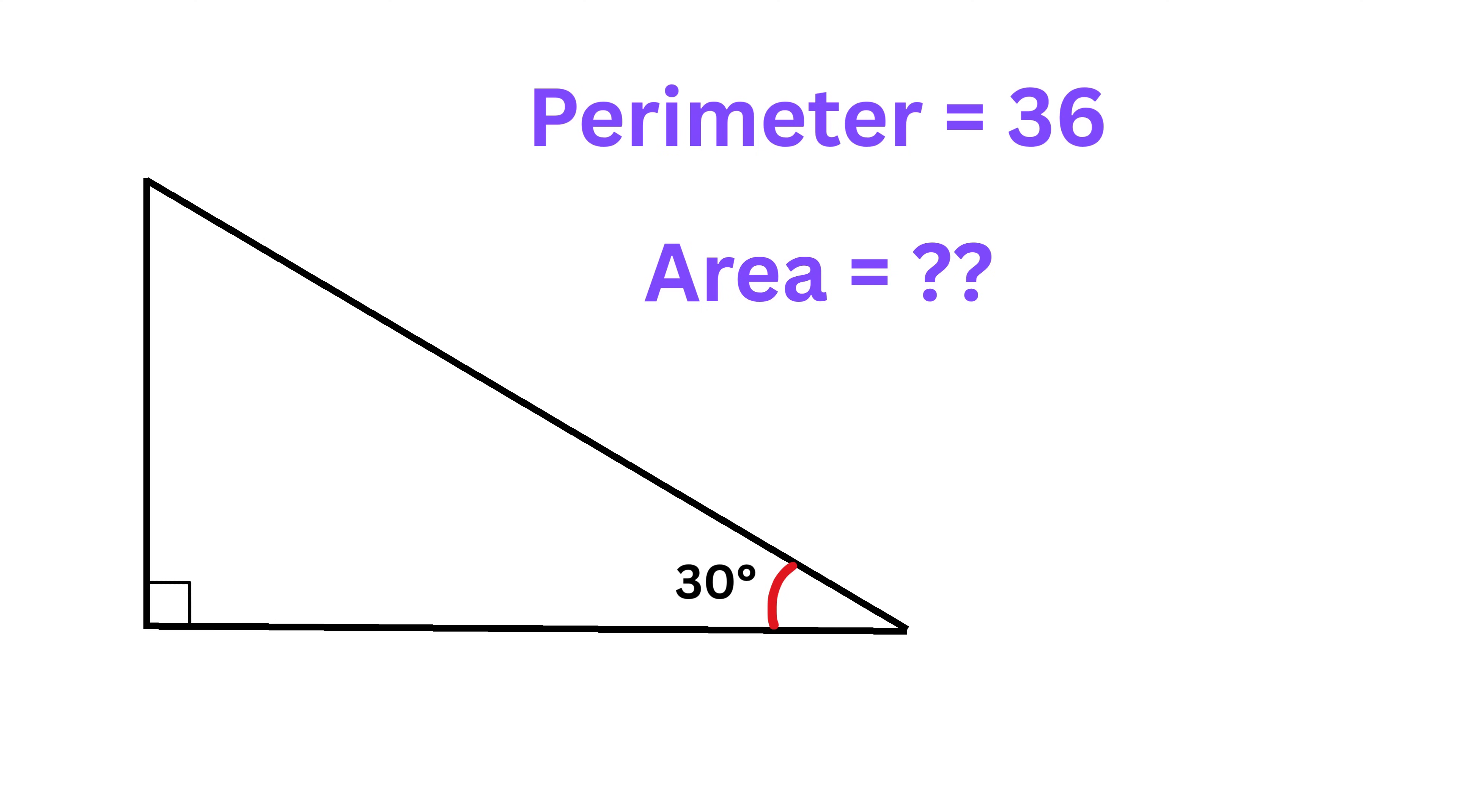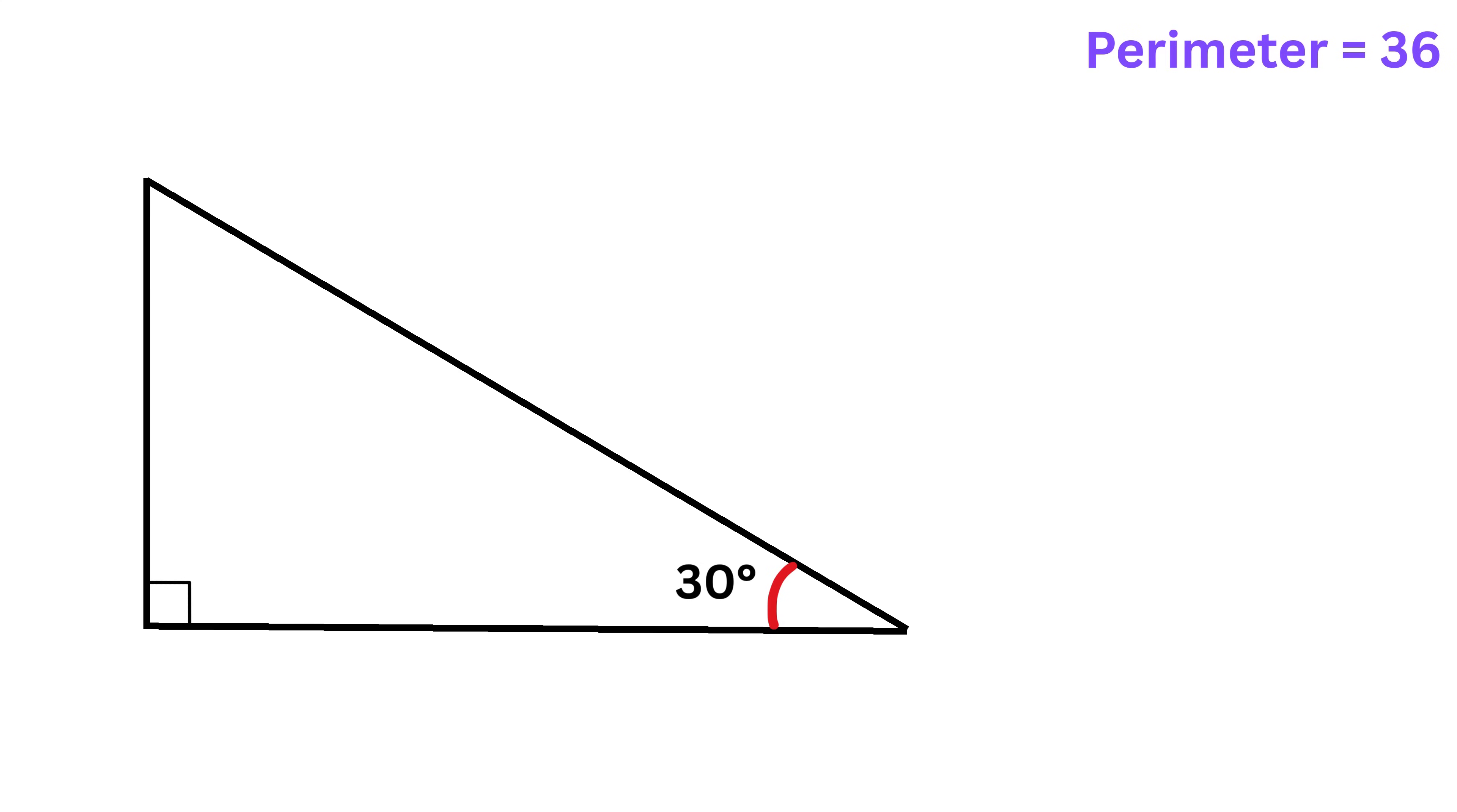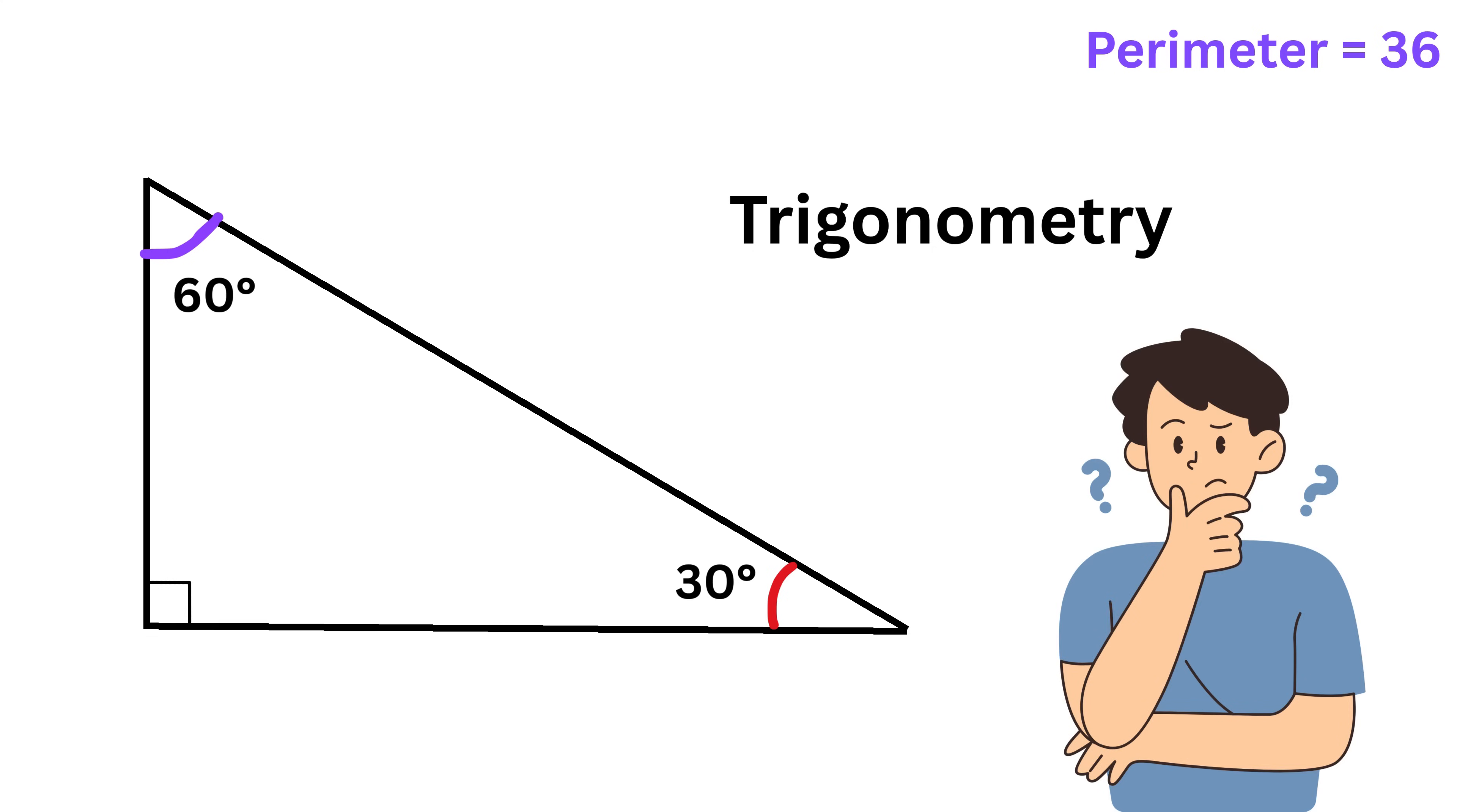Using only this much information, our job is to find the area of this triangle. So can you solve it? In order to solve this question, we will be using basic trigonometry and the special 30-60-90 triangle ratio. By the way, if this is 30 degrees and this is 90 degrees, then this angle will be 180 minus 30 minus 90, or 60 degrees. Now you might be wondering, what is trigonometry?